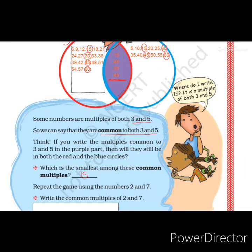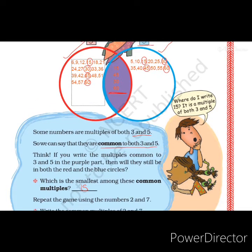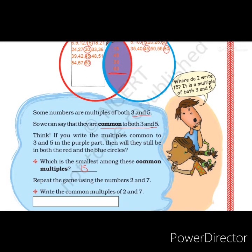The answer to 'which is the smallest common multiple' is 15. Now, repeat the game using the numbers 2 and 7. Instead of 3 and 5, we will use 2 and 7, and find which numbers are common multiples of 2 and 7.